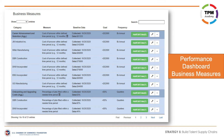A performance dashboard is built out with leading and lagging performance measures that have been identified as the most important in delivering positive return on investment for the employer collaborative members. In TPM, performance measures start from an employer perspective by identifying measure sets to improve talent sourcing for the most critical business functions and jobs.